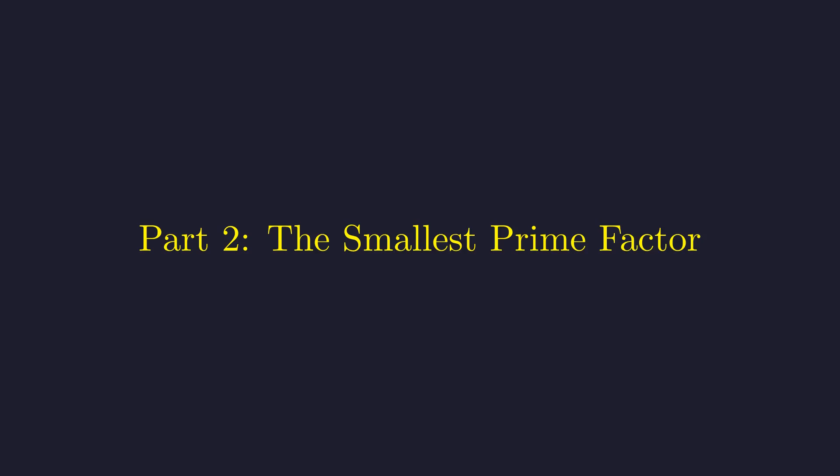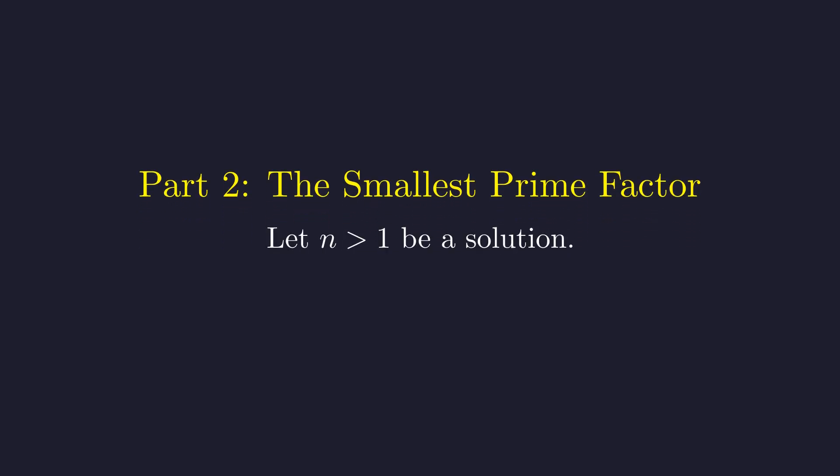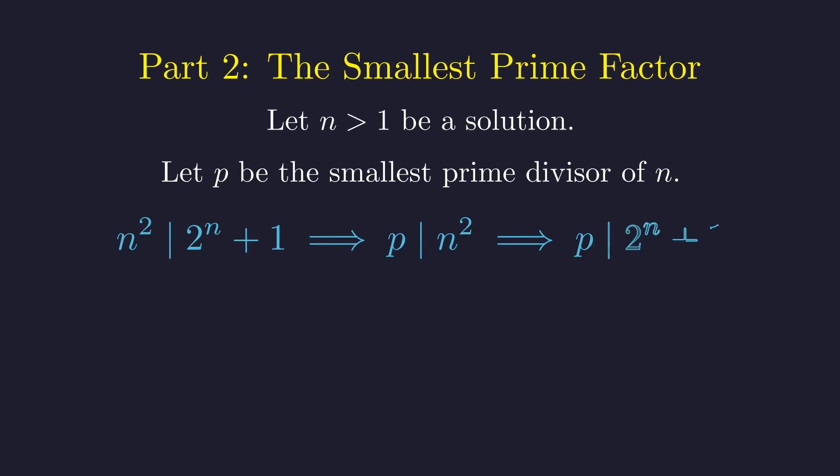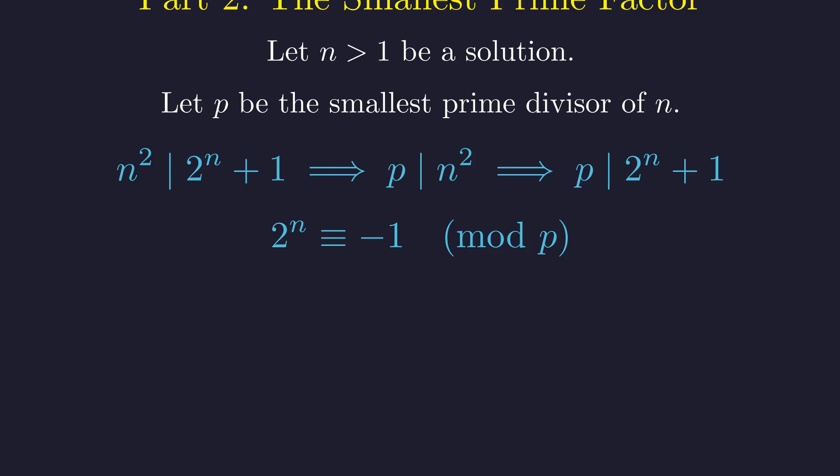Now we dive into the deep. We'll use a powerful strategy, analyzing the properties of the smallest prime factor of n. We already have n equals 1, so let's assume n is a solution greater than 1. Every integer greater than 1 has a prime factor. Let's call the smallest one p. From our problem's condition, if n squared divides 2 to the n plus 1, then p, as a factor of n, must also divide it. Stated differently, 2 to the n is congruent to negative 1 modulo p.